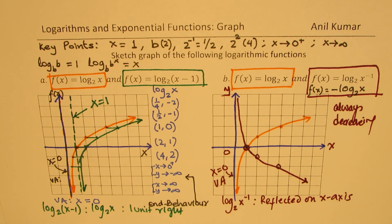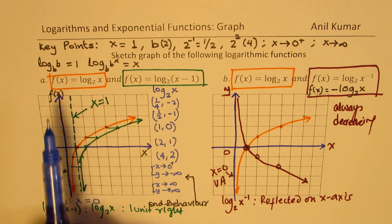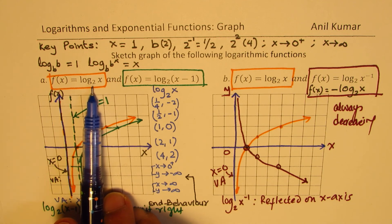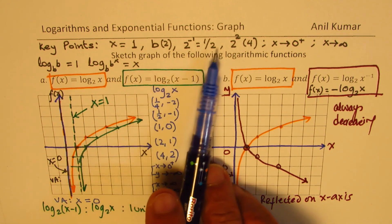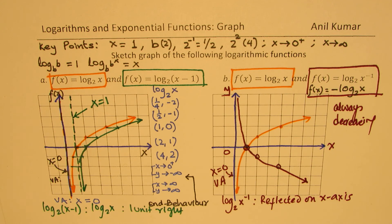Going forward, you can sketch graphs of many related functions using this concept. The key points are related to the base — if I change the base to 10, then my points will be 1, 10, 100, 1000, or 0.1, 0.01. Those will be your critical points to work with. Feel free to write a comment, share your views, and if you like and subscribe to my videos, that would be great. Thanks for your time and all the best.